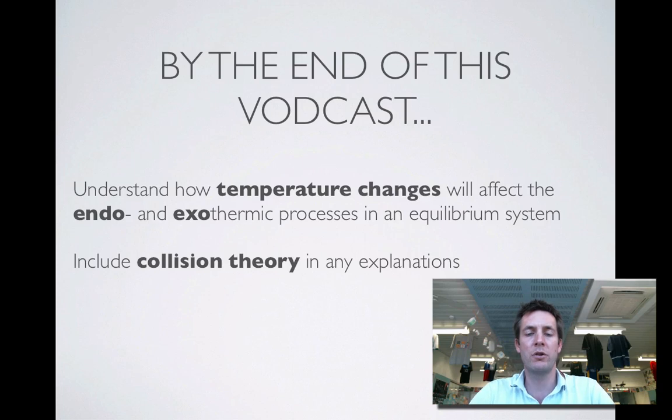In this film we're going to talk about the principles that we need to think about when we're considering what effect a temperature change will have on an equilibrium system. So we'll need to consider whether the forward and backward reactions are endothermic or exothermic. And once again we're going to try and include collision theory in our explanations. The effect on the graphs we'll come to later and that will be the next film.